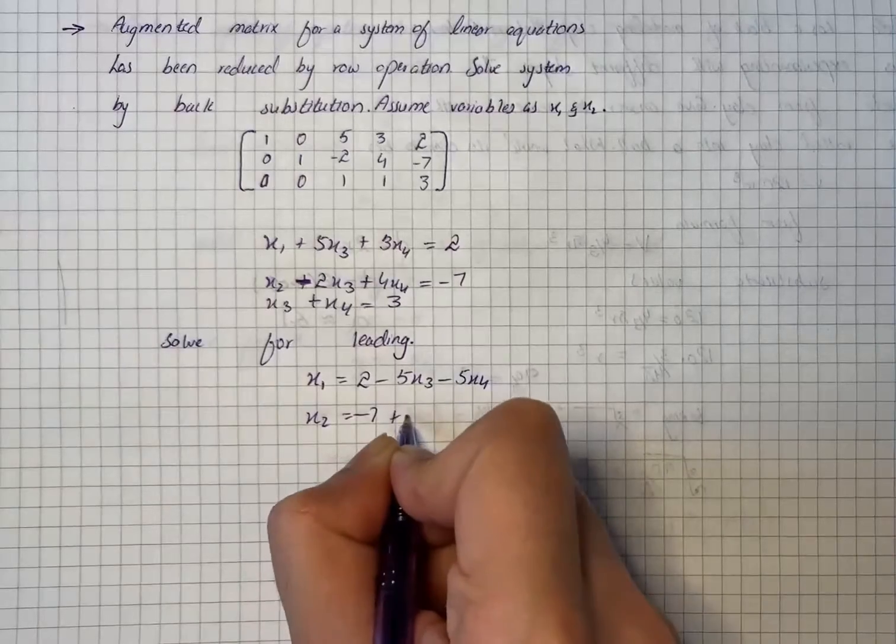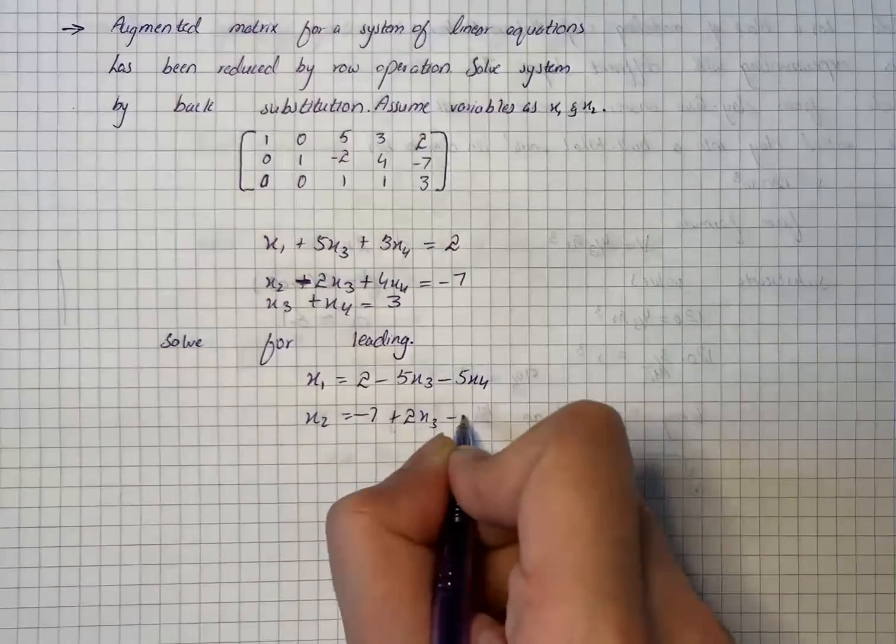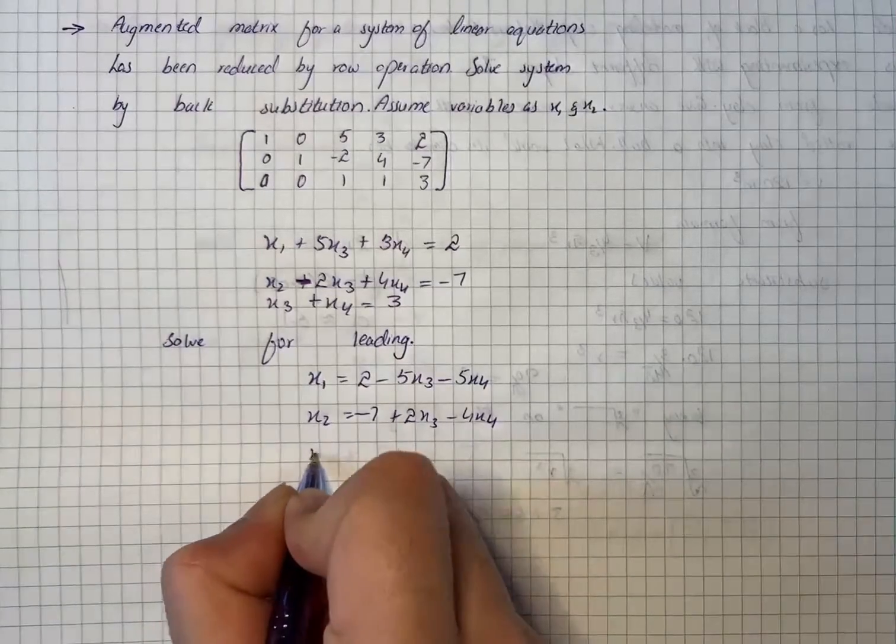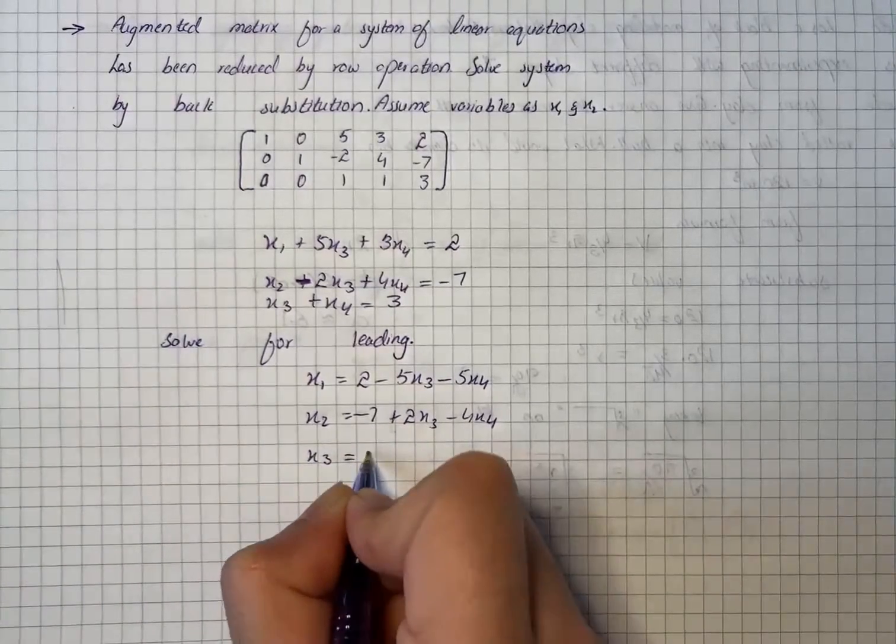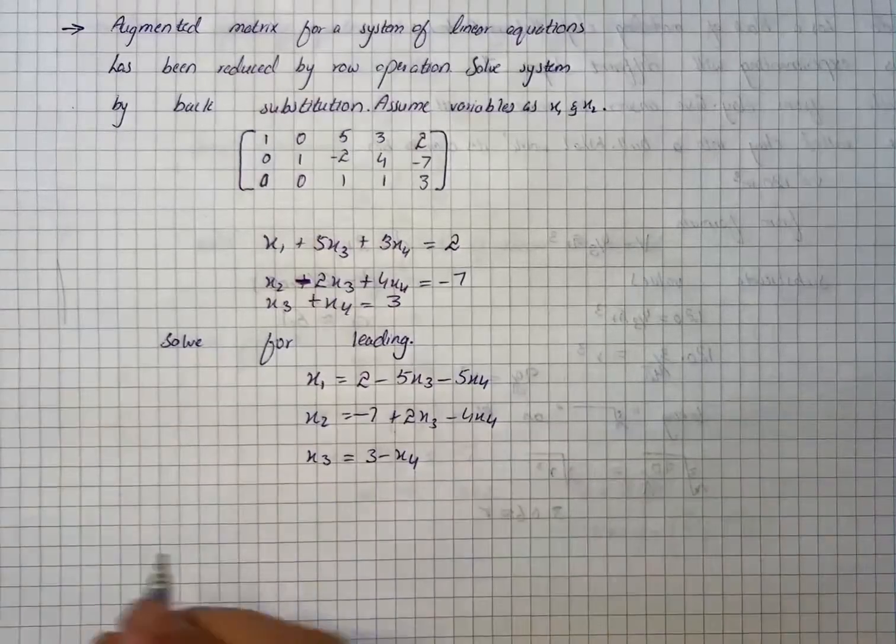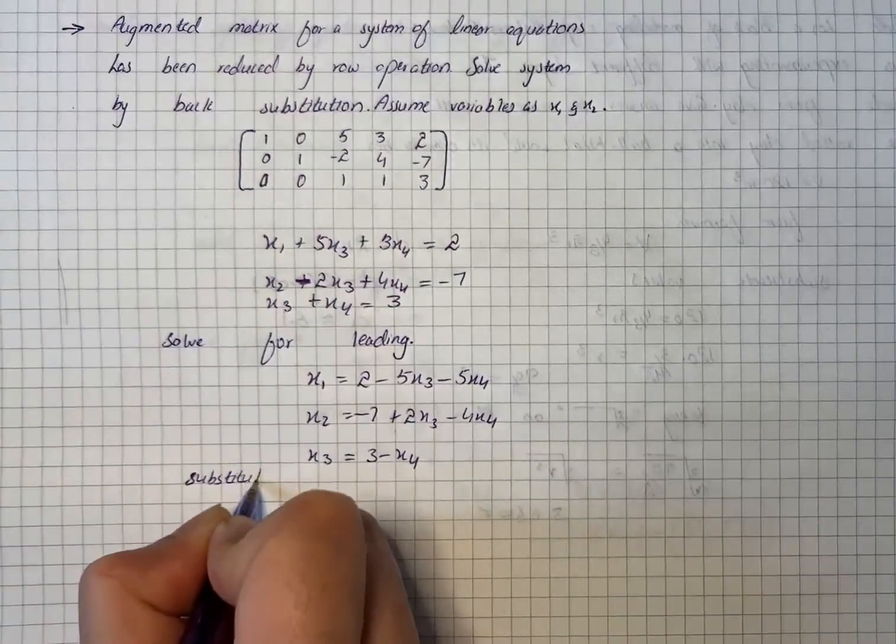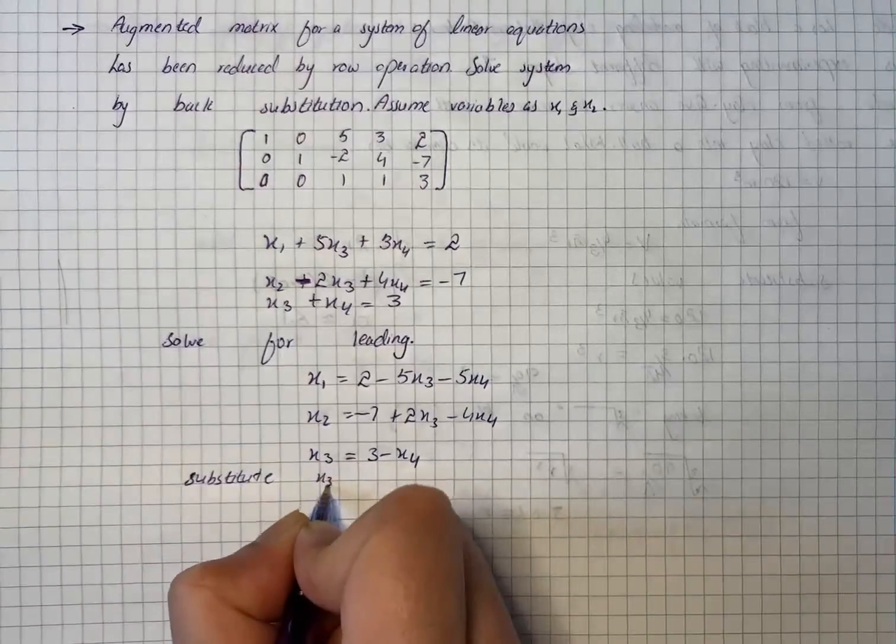And then we have x3 equals 3 minus x4. Now we will substitute x3 equals 3 minus x4 into first two equations.